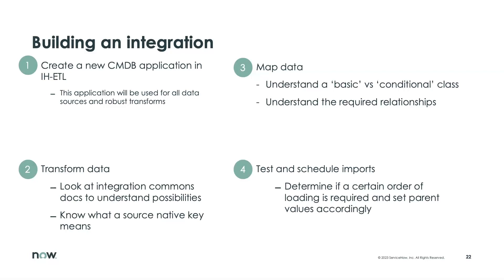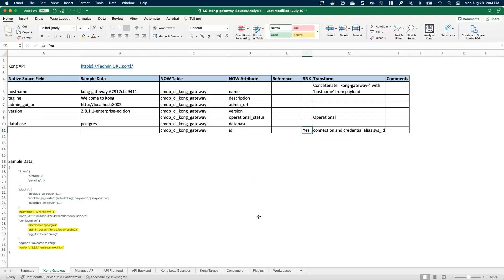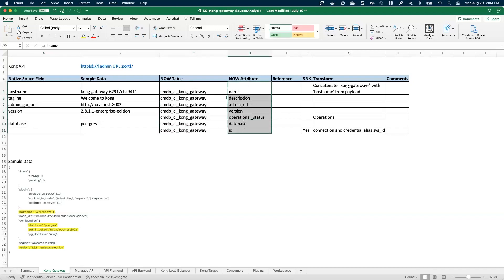We are going to talk about some of the more nuanced aspects throughout this. A very important concept to understand is the source-native key — when we actually get into the building process, we'll explore what source-native keys are in more depth. At this point, you should have your source analysis document, because this is going to show us what from the source fields are going to go into which tables and to which attributes. If we want to do any transformations or set anything explicitly, those should be noted as well.